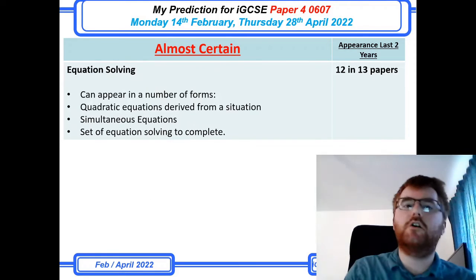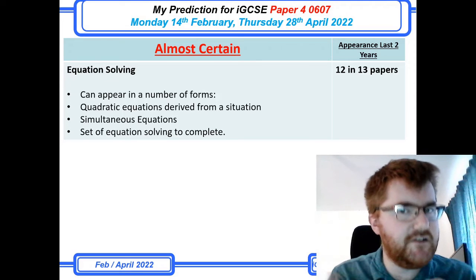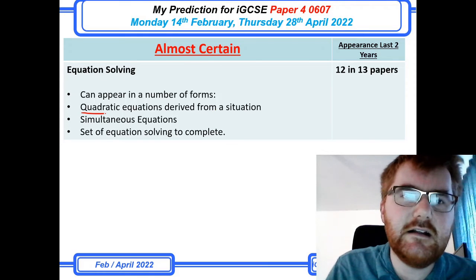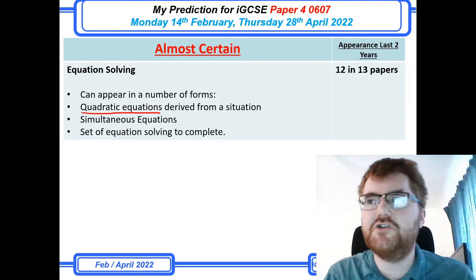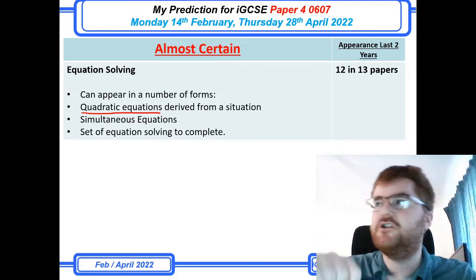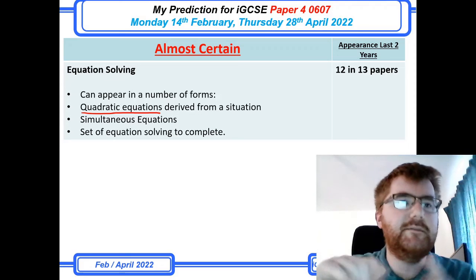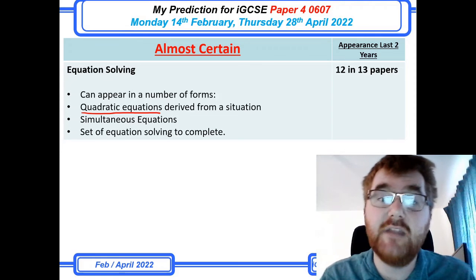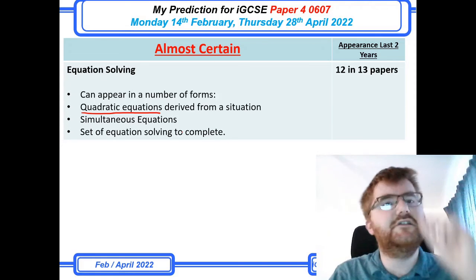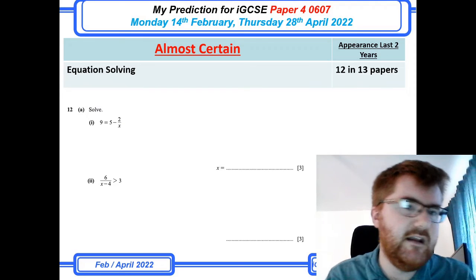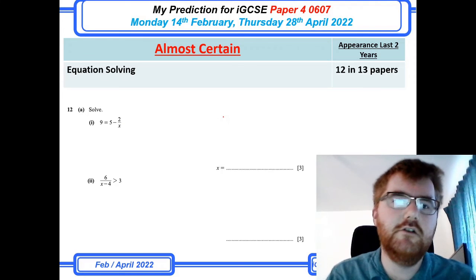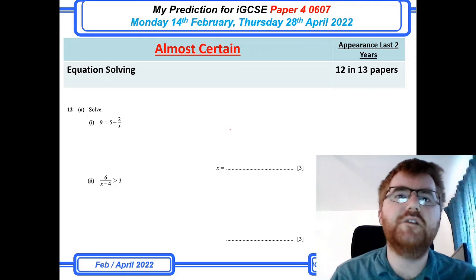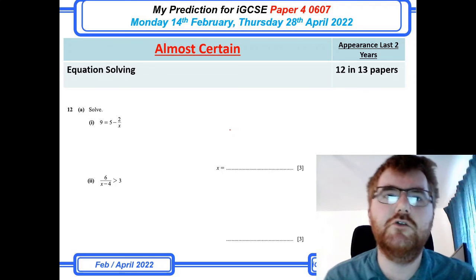On to equation solving, which can appear in a number of different ways. The most common is the classic quadratic equation derived from a situation — a speed-distance-time question, or the area of a 2D shape — where a quadratic emerges to solve. Sometimes, however, towards the end of the paper they just give you some equations to solve directly. This will also depend on what appeared on paper 2 earlier.